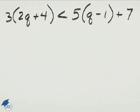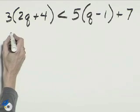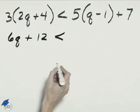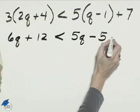We're going to solve this inequality and graph the solution on a number line. First, we'll remove the parentheses by the distributive property. This is 6q plus 12, less than, on the right-hand side, 5q minus 5 plus 7.